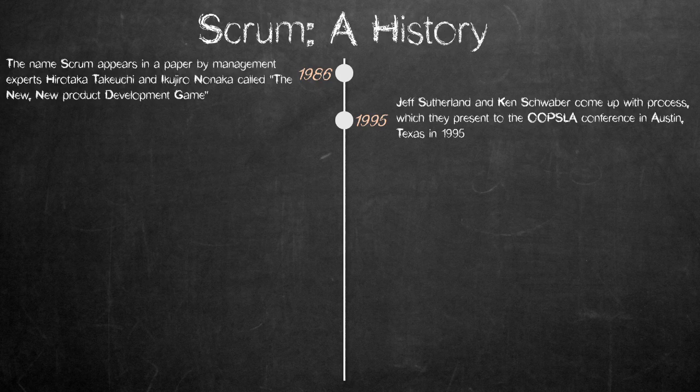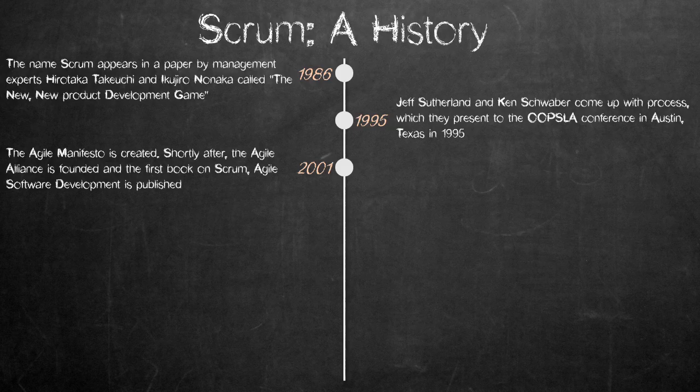In 2001, the Agile Manifesto was created. Shortly after that, Schwaber worked with Mike Bradley to describe the method in the book Agile Software Development with Scrum.